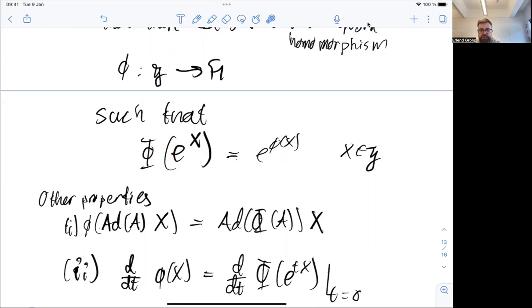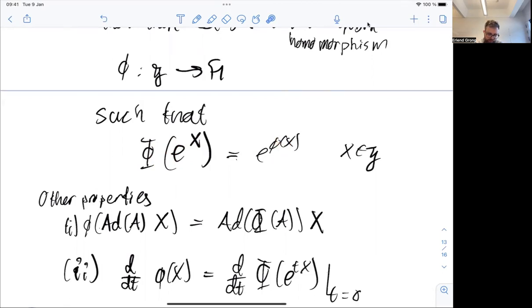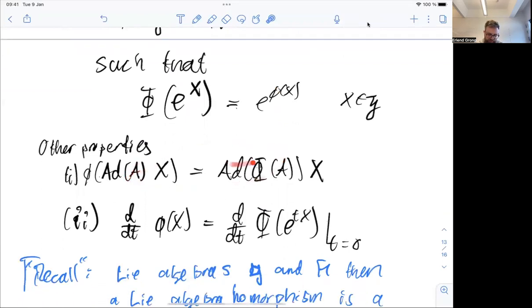We could write it as the exponential on the target group, in this case h, and then phi being acted on by a linear map. And then this linear map is a Lie-algebra homomorphism, and it satisfied this relationship here.